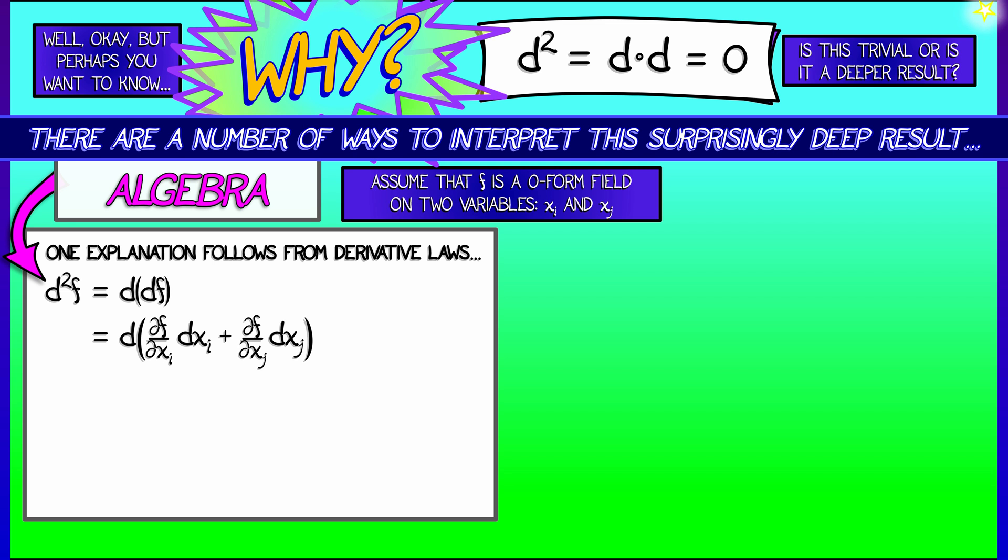Now when I do that, let's say with the first one, with partial f partial xi, what do I get? Well, I get the second partial derivative in f with respect to xj, and then xi, times dxj wedge dxi. The other term involving the partial with respect to xi vanishes because dxi wedge dxi is zero.